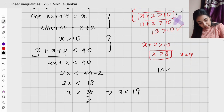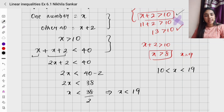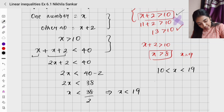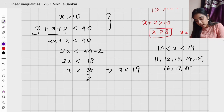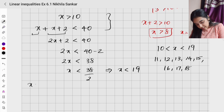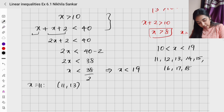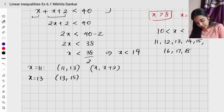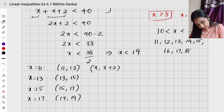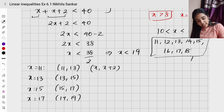So the range of x is 10 < x < 19. The possible values of x are 11, 12, 13, 14, 15, 16, 17, 18. But since we need consecutive odd numbers, x must be odd, giving x = 11, 13, 15, 17. So the ordered pairs are (11, 13), (13, 15), (15, 17), (17, 19).